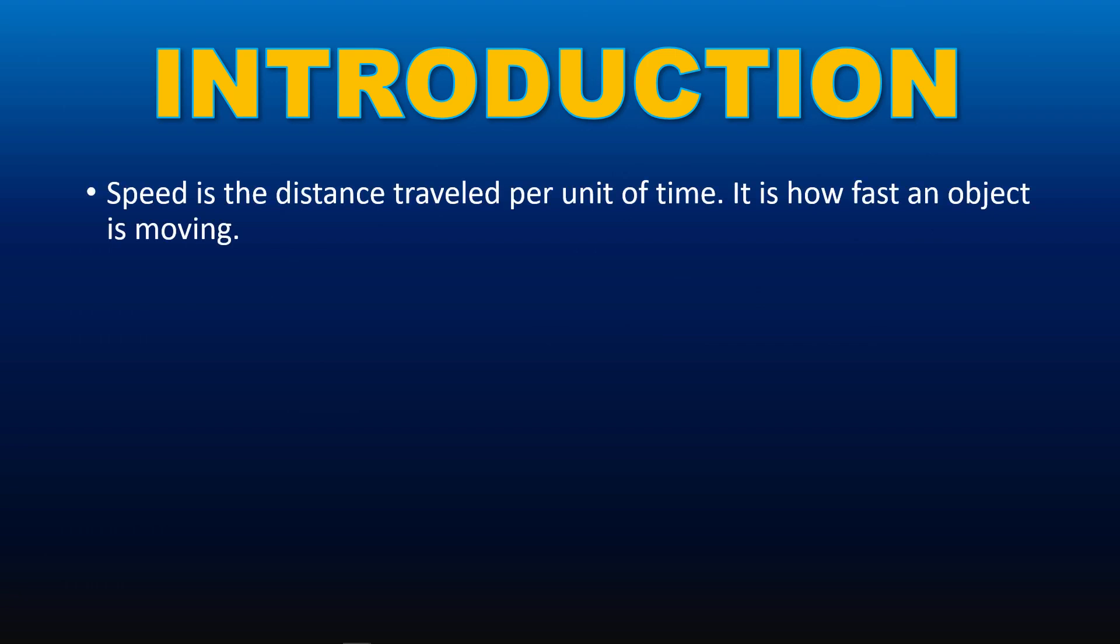Speed is defined as the distance traveled per unit of time or how fast an object is moving. Speed is a scalar quantity, it does not account for direction, while velocity is a vector quantity which is aware of direction. In this video, we will use the terms speed and velocity interchangeably.